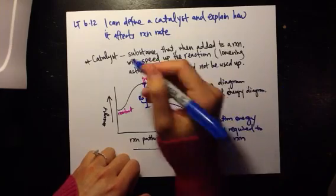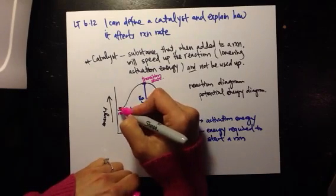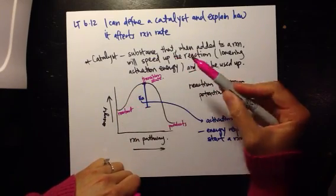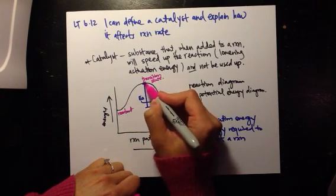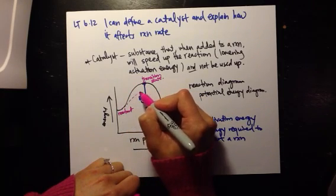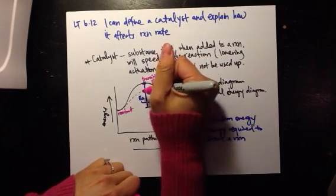Now, what the catalyst will do, if I were to draw what the catalyst is on this little hill, the catalyst is going to lower the activation energy. So instead of having to go all the way up here, it's going to just kind of take a shortcut through.